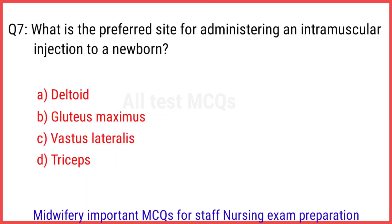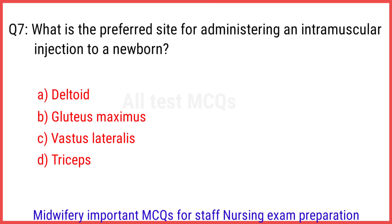Q7. What is the preferred site for administering an intramuscular injection to a newborn? The right answer is option C: Vastus lateralis.